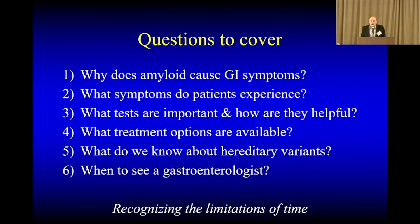I'm going to talk about these questions and try to go through everything in the next 20 minutes: Why does amyloid cause GI symptoms? What symptoms do patients experience? What tests are important and how are they helpful? What treatment options do we have now? What do we know about variants? And when is it good to see someone within GI?